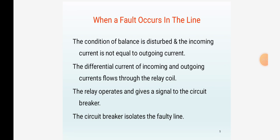When a fault occurs in the line, the condition of balance is disturbed and the incoming current is not equal to outgoing current. The differential current of incoming and outgoing currents flows through the relay coil. The relay operates and gives a signal to the circuit breakers. The circuit breaker isolates the faulty line.